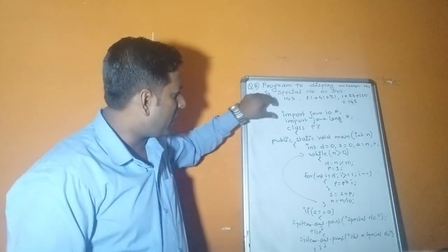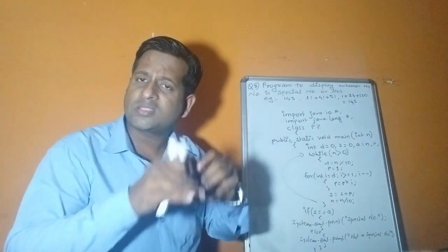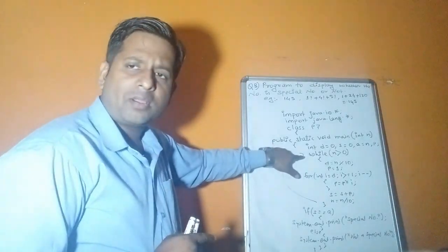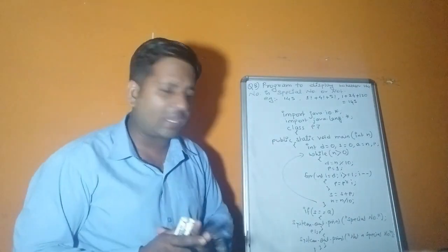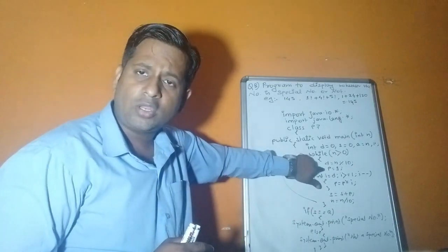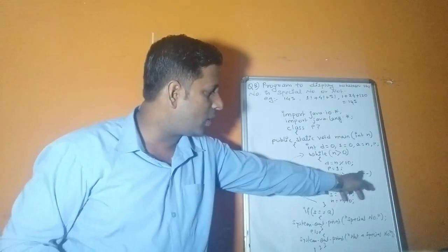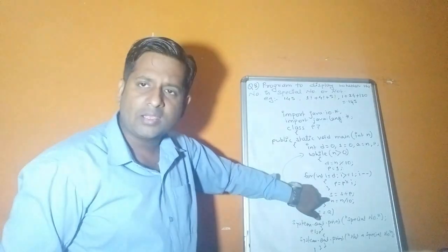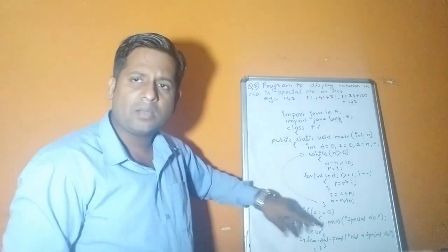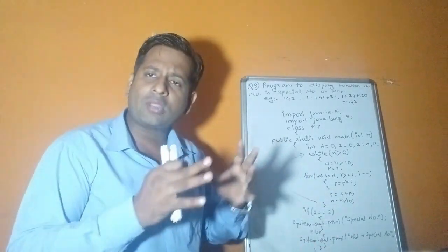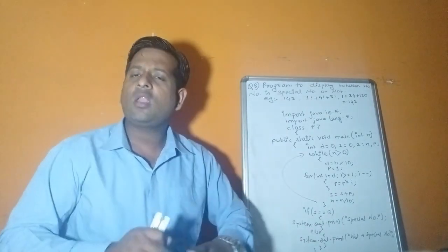Program P7: write the package, class P7, public static void main. Declare int n (number from user), d for digit, s for sum, a = n for backup, p for product/factorial. While n > 0: d = n % 10 to get digit; p = 1 (reset product for each digit); for loop from i = d down to 1 (i--): p = p * i; then s = s + p; n = n / 10. After the loop: if s == a, display 'special number'; else 'not a special number'.